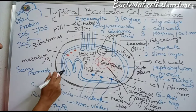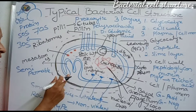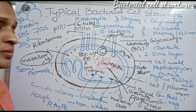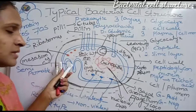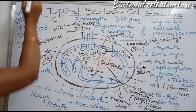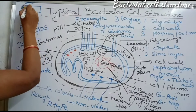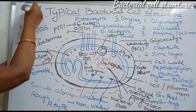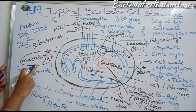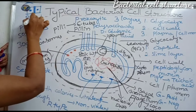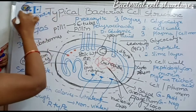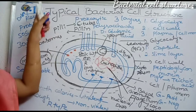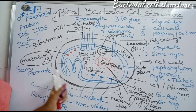Infoldings of the plasma membrane are called mesosomes. Mesosomes are used during cell division for the formation of a cross wall, which divides the bacterial cell into two daughter cells. Mesosomes are also used for cell respiration and DNA replication. They originate from the plasma membrane and are important for MSET exams.